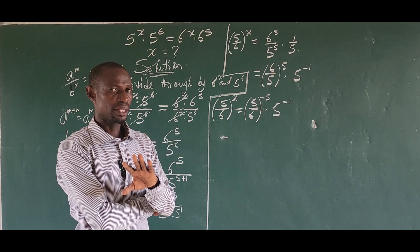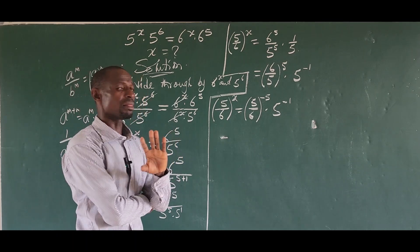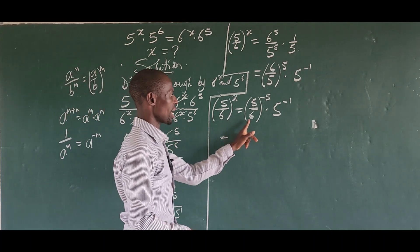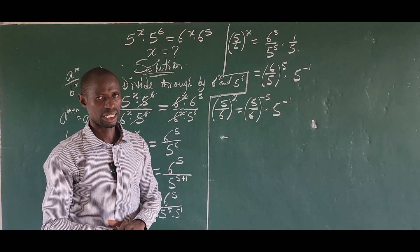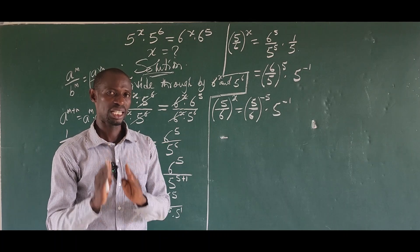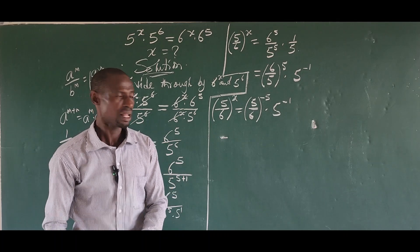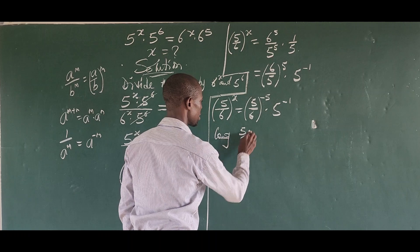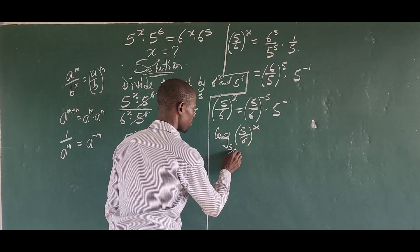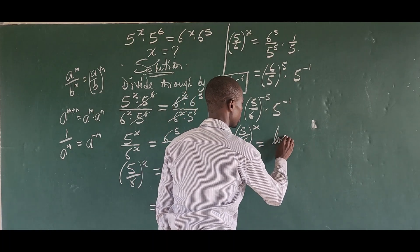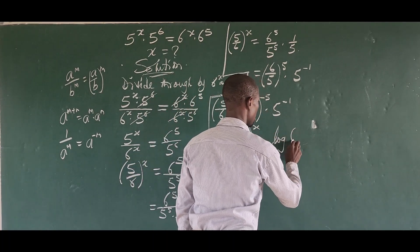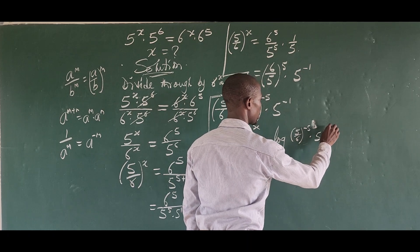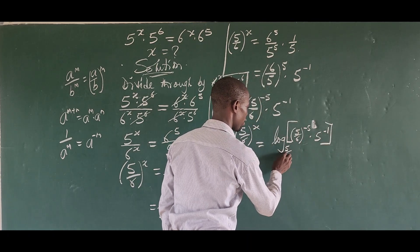Next, we take logarithms of both sides. We could use base 10, but because of the presence of (5/6) on both sides, it is easier to take log to base (5/6). So we write: log base (5/6) of (5/6)^x = log base (5/6) of [(5/6)^(−5) · 5^(−1)].